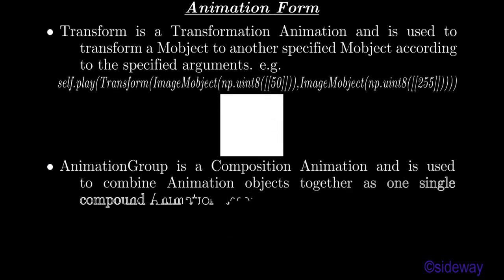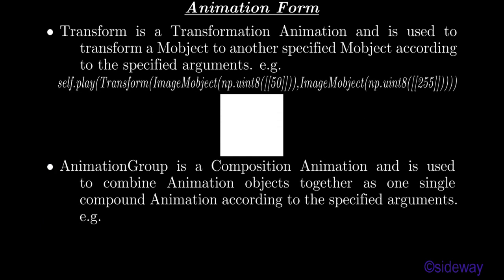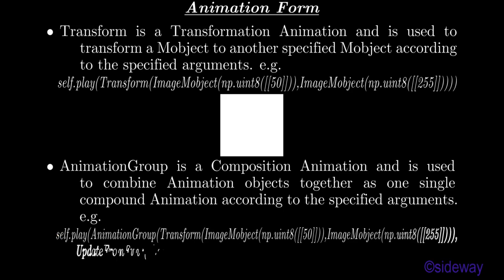AnimationGroup is a composition animation used to combine animation objects together as one single compound animation according to the specified arguments. For example: self.play(AnimationGroup(Transform(ImageMobject(np.uint8(50)), ImageMobject(np.uint8(255))), UpdateFromFunc(circle, lambda mm: mm.scale(0.98)))).